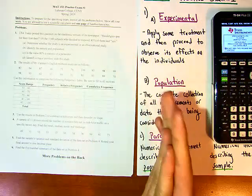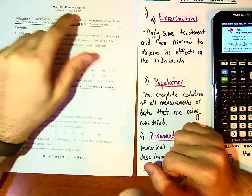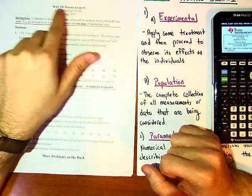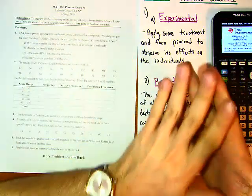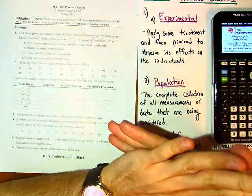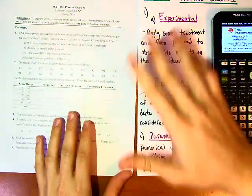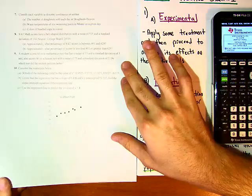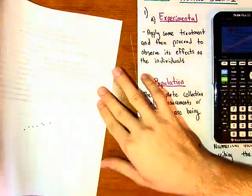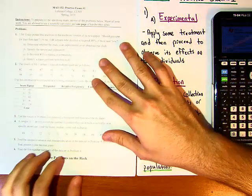Welcome everybody, let's do this. This is Exam Number One review for Statistics at Lehman College. This is the first exam review — it should look something like this — and the first question we'll look at is coming up.